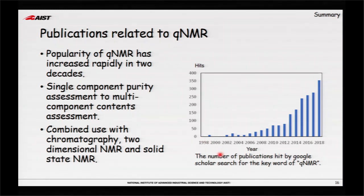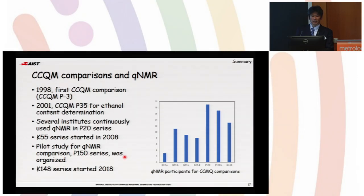Since about 20 years ago, the QNMR publication is getting higher and higher, and last year almost 350 publications from Google search was found. And the system is expanding from one component to multi-component, and also combined chromatography and solid-state NMR. And CCQM comparison, believe it or not, in 1998 we have CCQM P3 comparison and P35. But since then, long time, NMR was forgotten from this community. 2009, we have the CCQM symposium in OAWG, and since then the number of participants are increased.